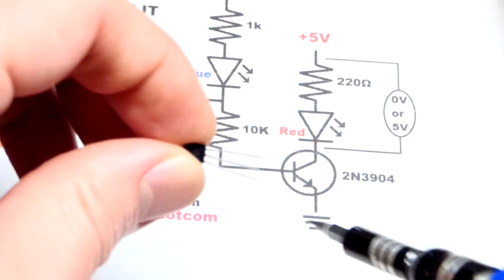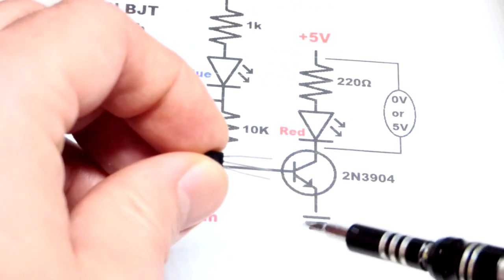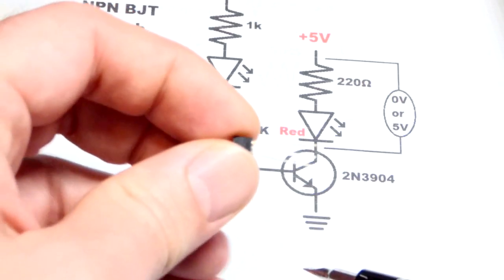First I'll show the transistor. If I put it like this flat side facing us the collector's on top, base in the middle and emitter is at the bottom right there.